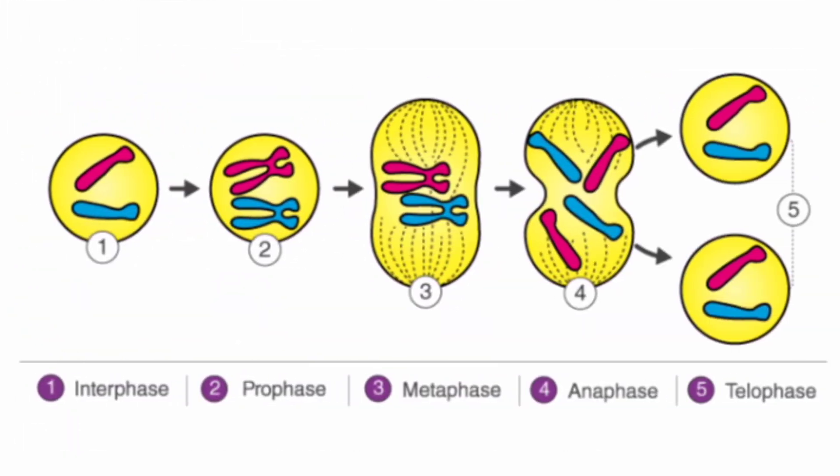Before mitosis, during a stage called Interphase, DNA is replicated and the chromosomes are copied. During the first stage of mitosis, Prophase, each chromosome becomes visible as two exact copies called chromatids, joined at a centromere. The nuclear membrane breaks down.